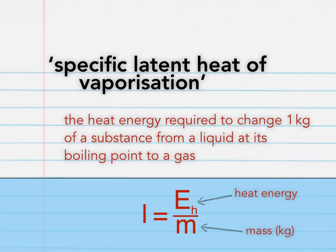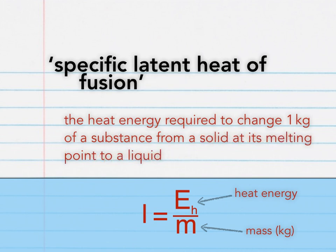The same equation can be used to help work out the definition for specific latent heat of fusion. The only change is that this relates to a change of state from solid to liquid. So specific latent heat of fusion is the heat energy required to change one kilogram of a substance from a solid at its melting point to a liquid. And that's us done for properties of matter definitions.